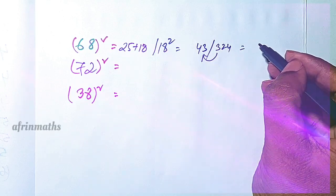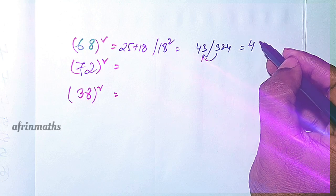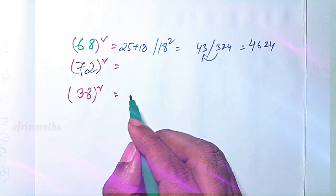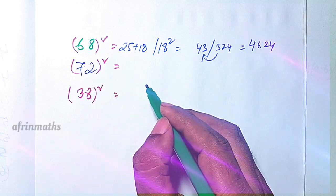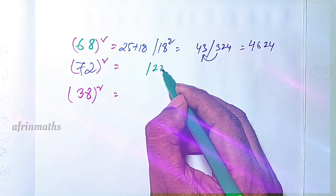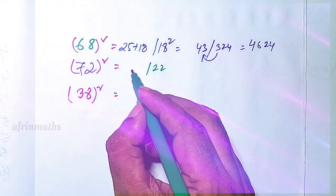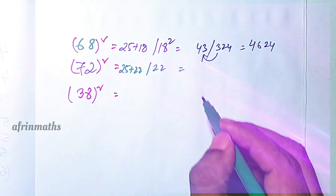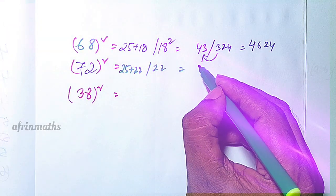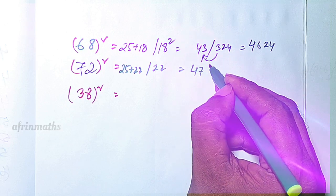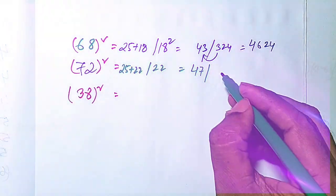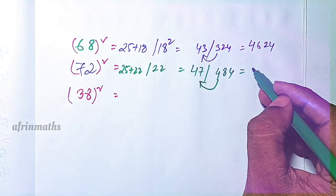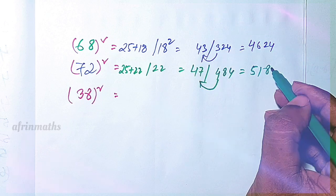Let us check 72 squared. It is 22 more than 50, so 25 plus 22 is 47. 22 squared is 484. The 4 carries over, giving 47 plus 4 equals 51. So the answer is 5184.